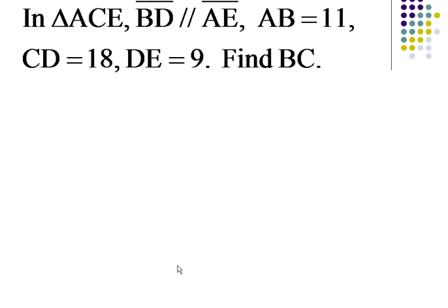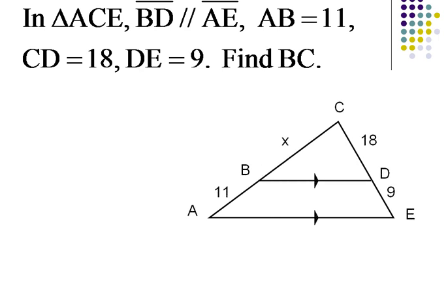We can see that again here. Triangle ACE, say BD is parallel to AE, AB is 11, CD is 18, DE is 9, find BC.